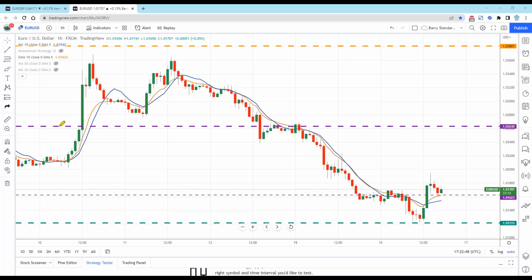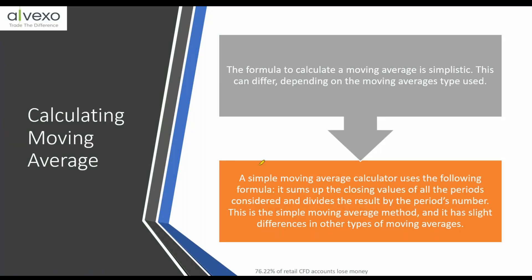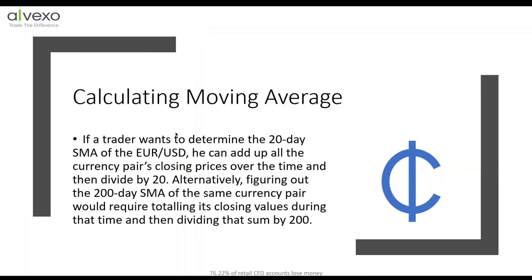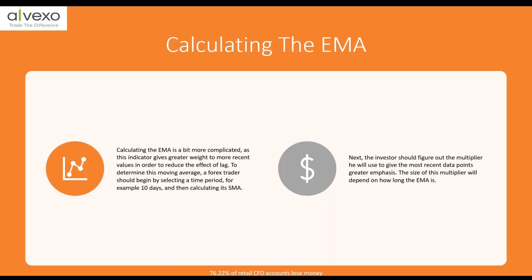Most indicators on our charts today have been recalculated to use EMAs. The mathematical calculation is a little more difficult, but you never have to calculate anything by hand, so it's not all that important. Calculating an EMA is more complicated — as an indicator it gives greater weight to more recent values in order to reduce the effective lag. What it does is take a multiplier: the multiplier is 2 divided by the number of time periods plus 1.